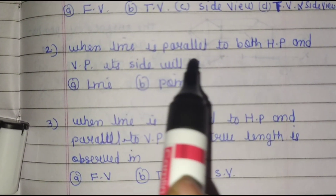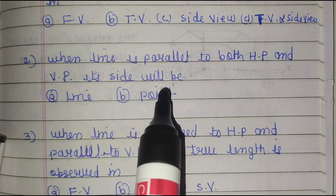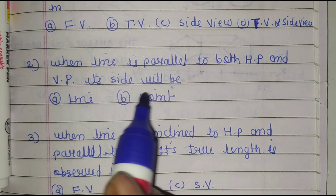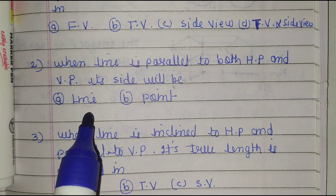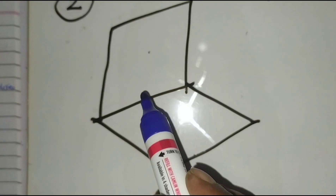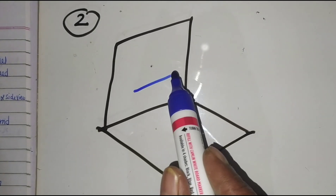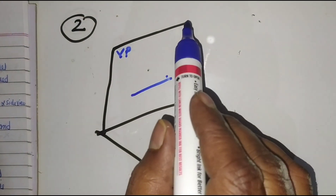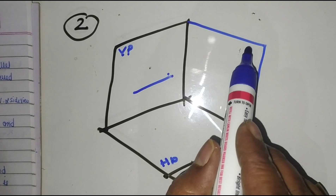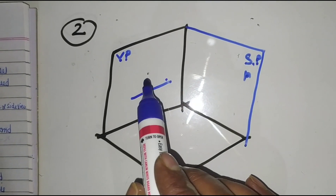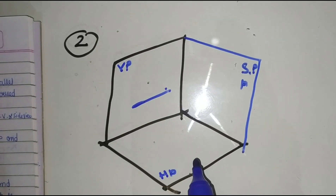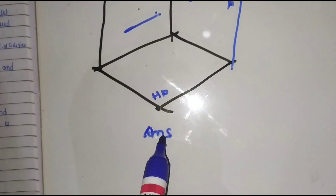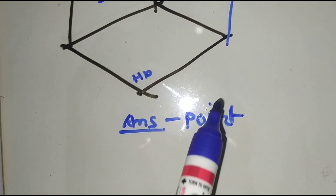The second problem: when a line is parallel to both HP and VP, its side view will be — the options are line and point. When the line is parallel to both VP and HP, the side view we obtain is a single point. The answer is point.